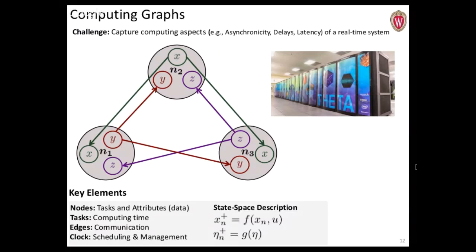The real challenge with this kind of simulation is ultimately dealing with delays, latency, and asynchronicity — having lots of different actors moving at the same time while communicating information. We came up with key elements of the computing graph to manage that. You have different nodes with their computing tasks and defined attributes; these attributes can be communicated to each other. The nodes have tasks with a real compute time, edges do communication that takes a real amount of time, and we needed a way to manage the asynchronicity — so we have a global clock for scheduling management.